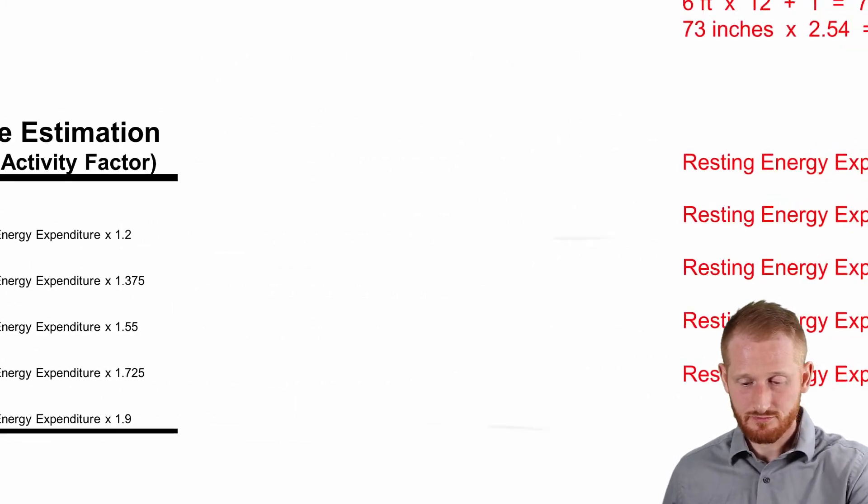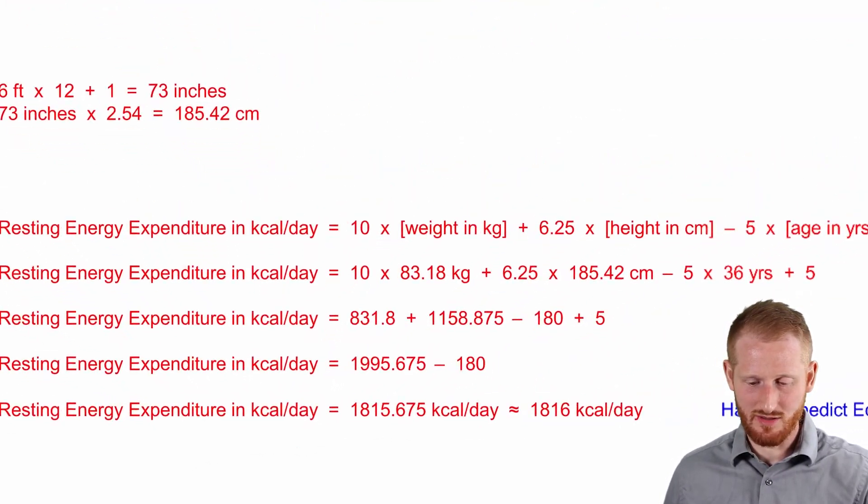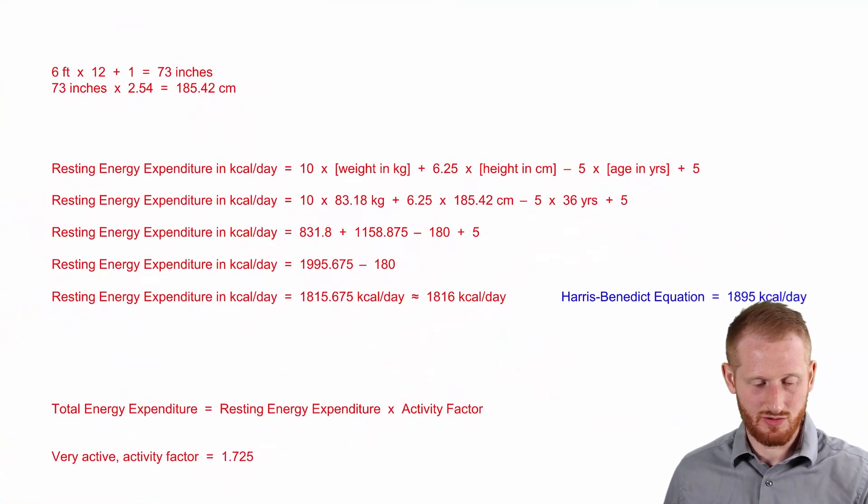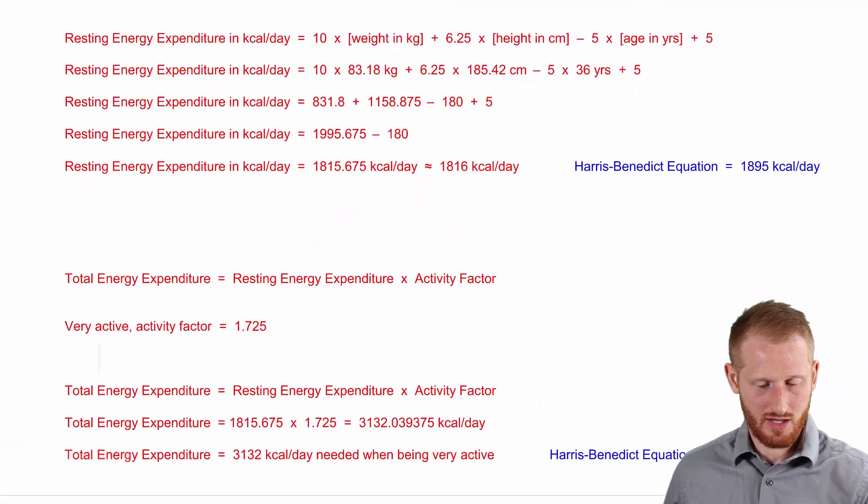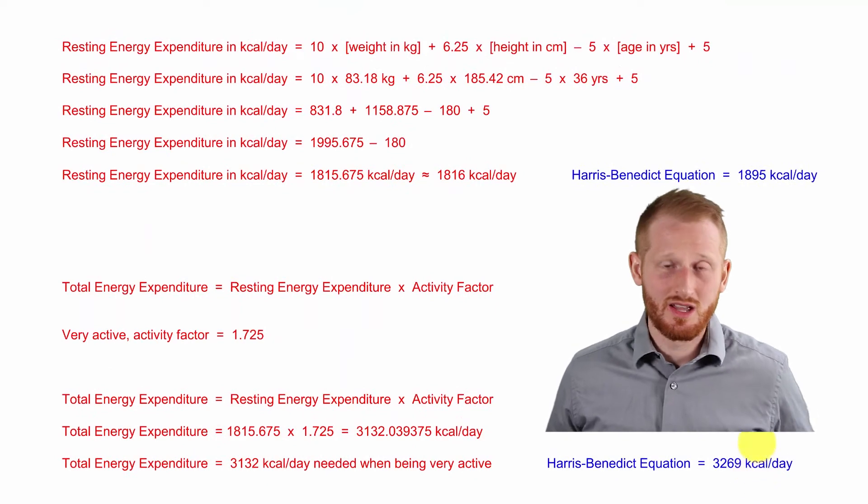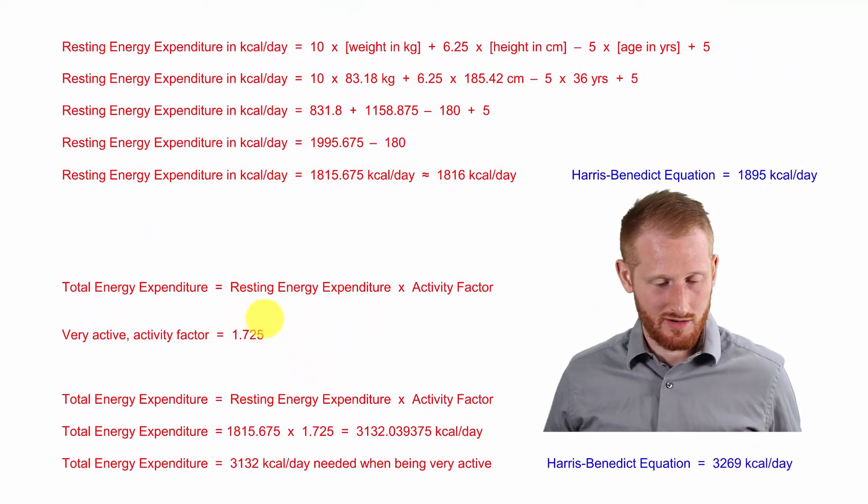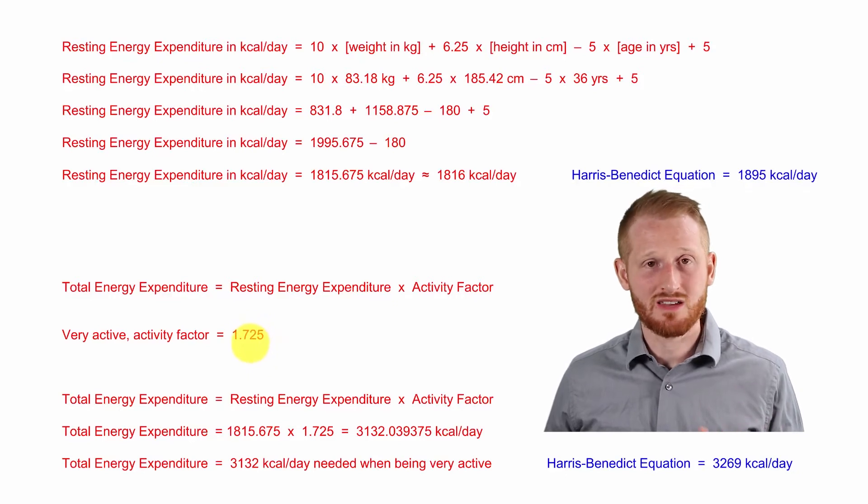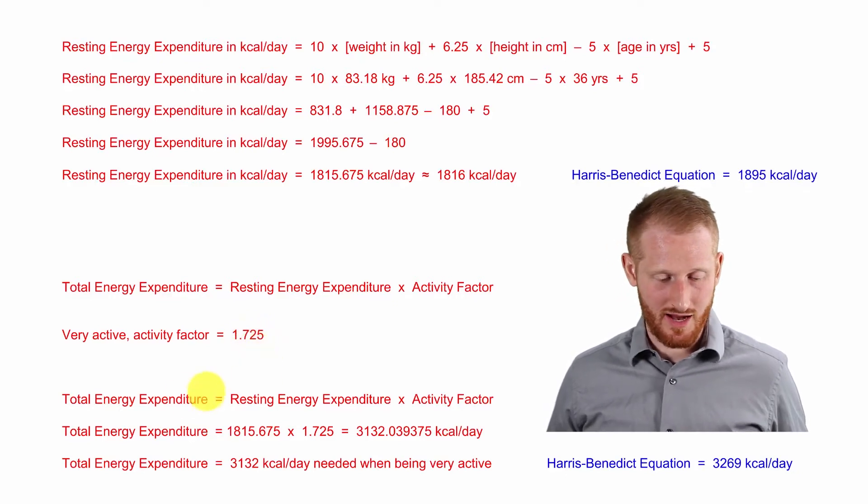But again, these are normal activity factors. This is what everybody pretty much uses who does these sorts of calculations. So coming back, here was the activity factor for very active, again, the 1.725 because he was very active.